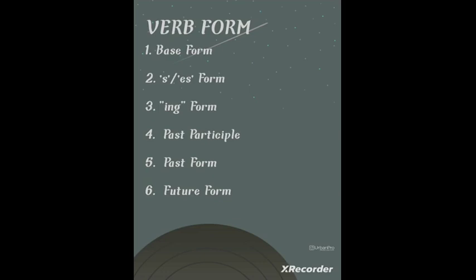The first one is base form, second is S and ES form, the third one is ING form, the fourth one is past participle, the fifth one is past form, and the sixth one is future form. You might have heard these types of forms somewhere — let us understand in detail what these forms are, why they are used, and where they are used.